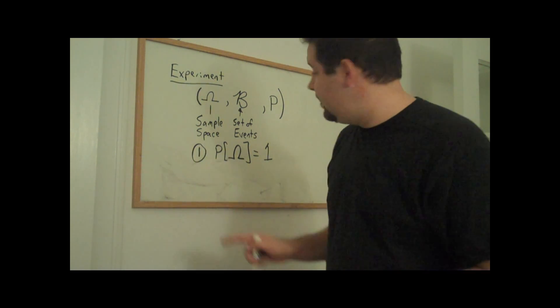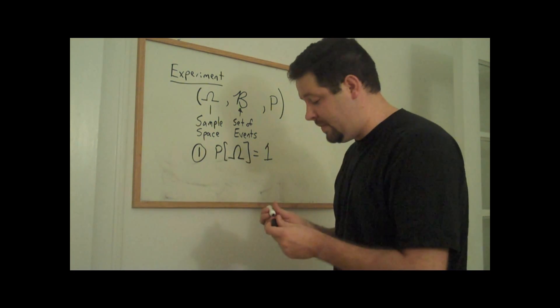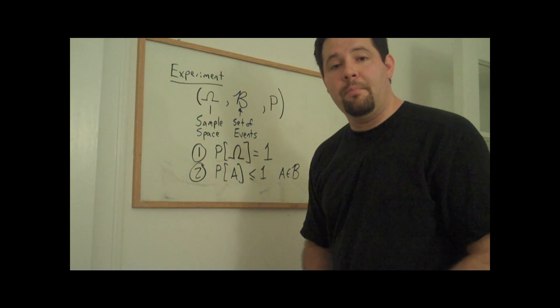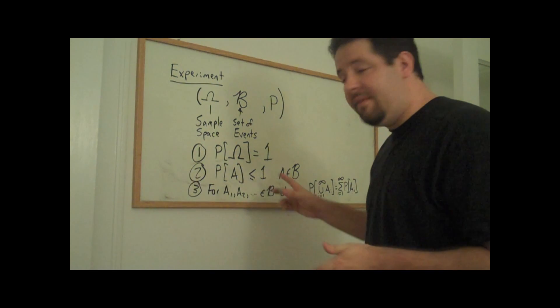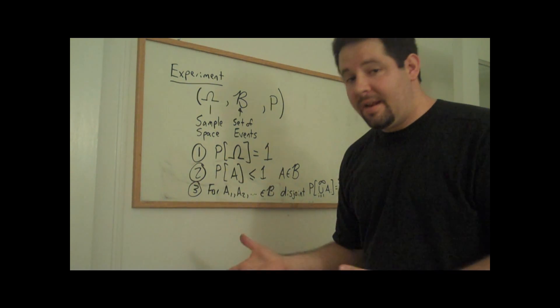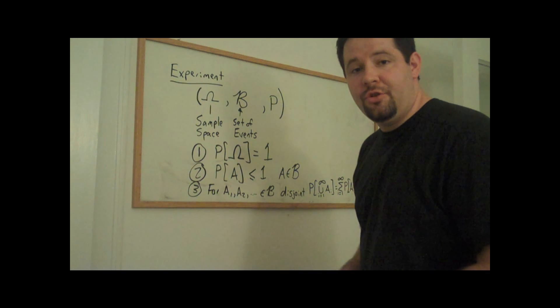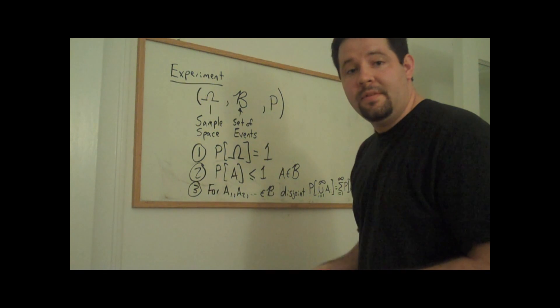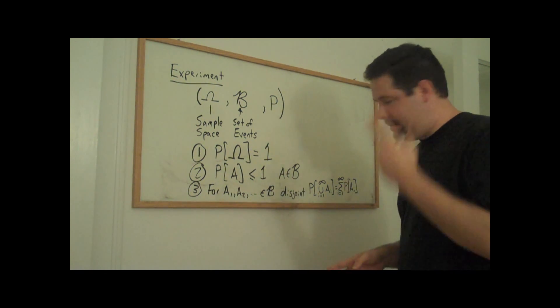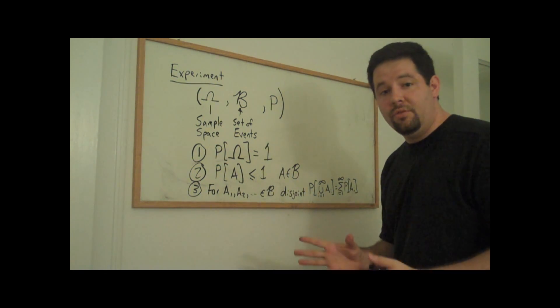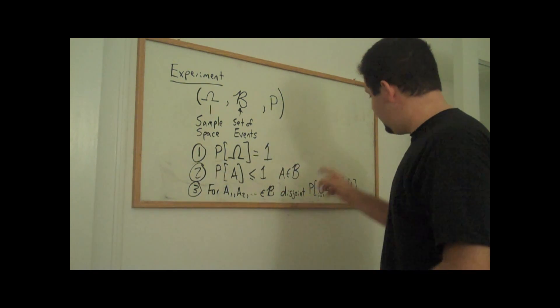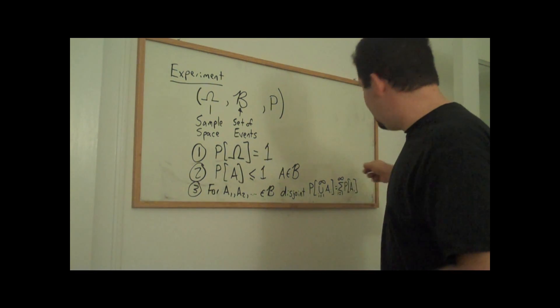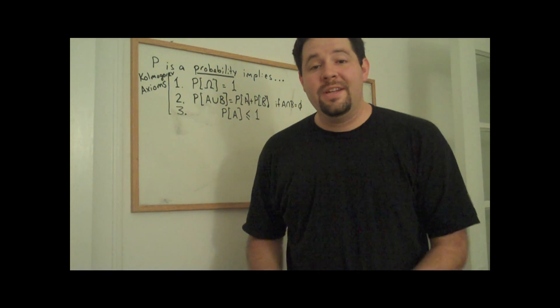First, the probability of the event containing the entire sample space. Well, that probability is 1. Any set is going to have a probability of less than 1. If we have a sequence of events in the set of events and they are disjoint, that is that there's no intersection between any of these sets, then what happens is if we take the countable union of them and form that set, take the probability of that, that has to be equal to the sum of the probabilities.